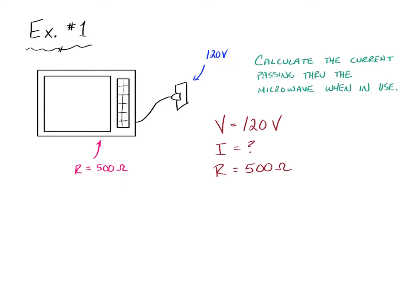So what we can do is we can list out everything that's known. We know the voltage in this problem is 120 volts. The current is unknown. That's what we're looking for. But we know the internal resistance of this microwave is 500 ohms.